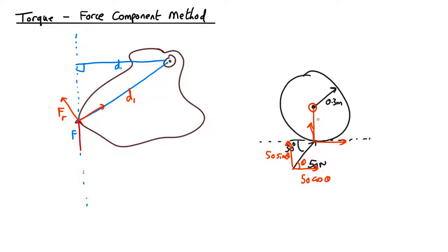And the torque is equal to this distance, the torque is written tau, is equal to this distance here, which is 0.3 meters.